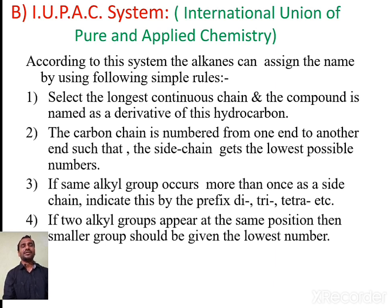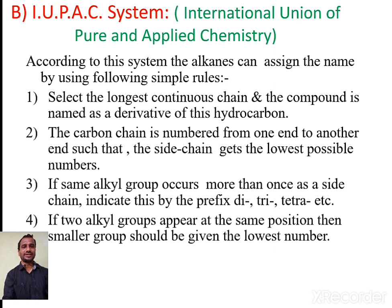The fourth rule: if two alkyl groups appear at the same position, then the smaller group should be given the lowest possible number. By using these four simple rules, we can easily assign the IUPAC nomenclature for any given alkane or organic compound. With that, we conclude this video. Thank you.